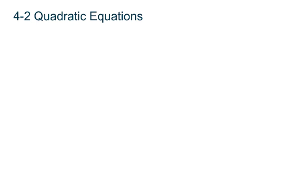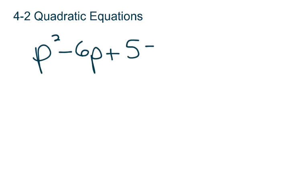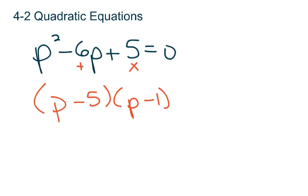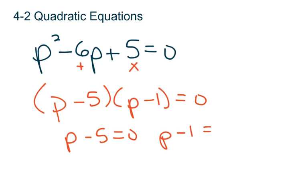Quadratic equations are any equation where the biggest exponent of the variable is squared. We'll do this problem using the variable p: p squared minus 6p plus 5 equals 0. In Algebra 1, you learned how to solve this by factoring — looking for two numbers that multiply to give you 5 but add to give you negative 6. Those are p minus 5 and p minus 1. Using the zero product property, p equals 5 and p equals 1.